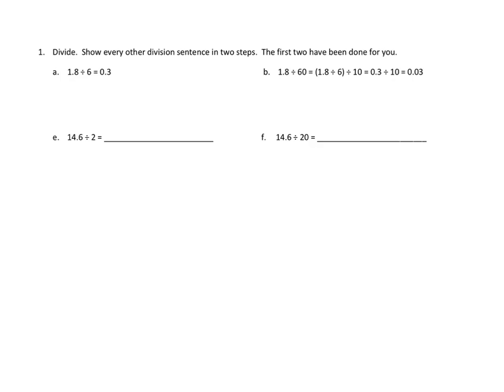Let's take a look if we can do this problem. 14.6 divided by 2. There's 14 ones, so first we've got to do this problem. I see 14 ones. 14 ones divided by 2 is 7, and 6 tenths divided by 2 is 3. So I think 14.6, or 14 and 6 tenths divided by 2 is 7.3.